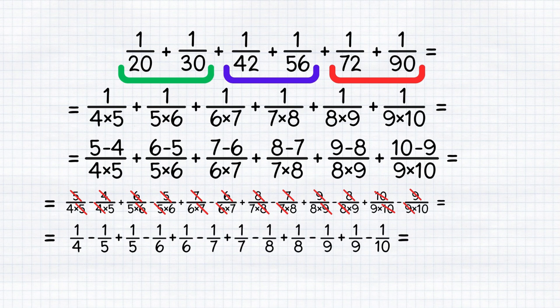Now, we need to do a final simplification. So we have 1 fourth minus 1 tenth. Let's bring them to a common denominator, which is 20. We multiply the numerator of the first fraction by 5, and the numerator of the second fraction by 2. 5 minus 2 over 20, or 3 over 20.